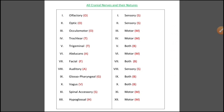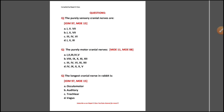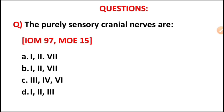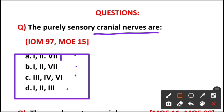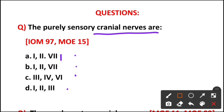Now let's solve some past questions. Question one: the purely sensory cranial nerves are — option A: I, II; option B: I, II (same); option C: III, IV, VI; option D: III, III. Using our mnemonic, the correct option is option A — cranial nerves I and II are purely sensory.